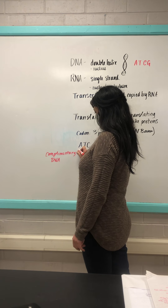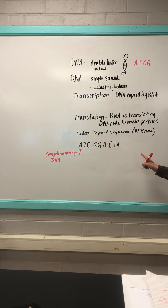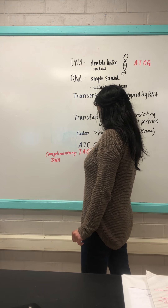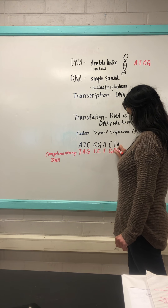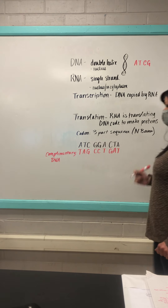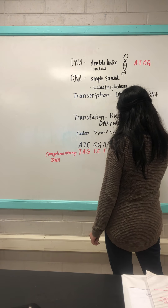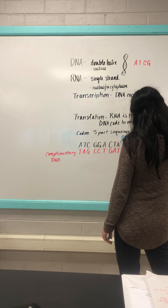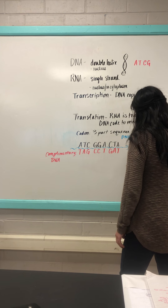Working through the complementary DNA strand: A pairs with T, T pairs with A, C pairs with G, G pairs with C, A pairs with T, C pairs with G, T pairs with A, and A pairs with T. That gives us our complementary DNA strand — the other side of the double helix. During DNA replication, an enzyme called DNA polymerase comes through and splits the two strands so a copy can be made.